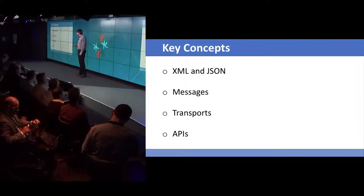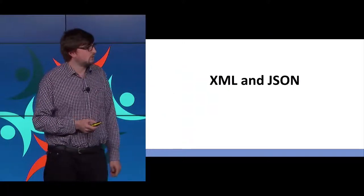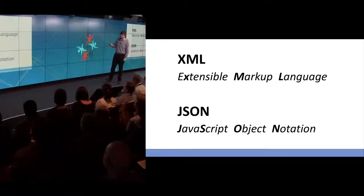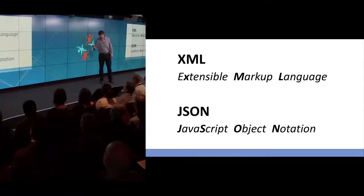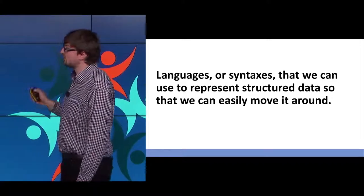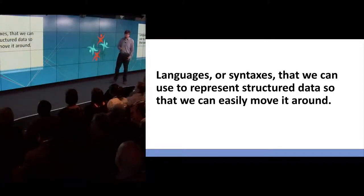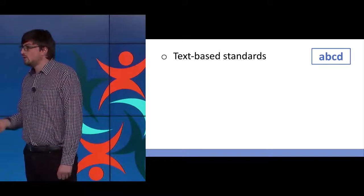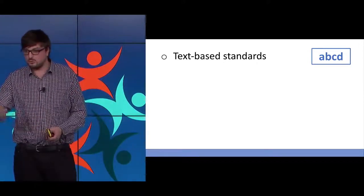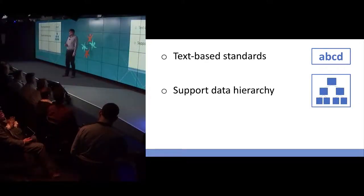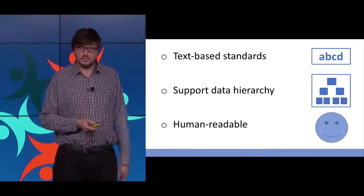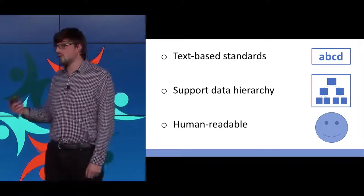There are a few key concepts we need to understand about messaging. I'm going to start with XML and JSON. XML stands for Extensible Markup Language, and JSON stands for JavaScript Object Notation. Both are languages or syntaxes that we use to represent structured data so that we can easily move it around between different systems. They're both text-based standards, using characters we'd recognise from our computer keyboard. They both support hierarchical data, meaning our data can go many levels deep and be detailed. And they're both human-readable, which is significant because it makes them easier for humans to work with, as well as the machines processing it.